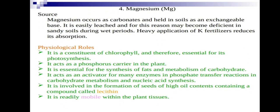Now we will discuss the secondary nutrients: magnesium, calcium, and sulfur. Magnesium occurs as carbonate held in soils as an exchangeable base. It is easily leached and may become deficient in sandy soils. Heavy application of potassium reduces magnesium absorption. The main physiological role of magnesium is as a constituent of chlorophyll, making it essential for photosynthesis.